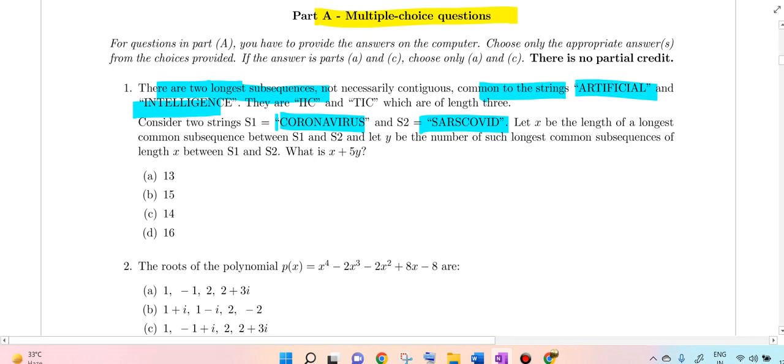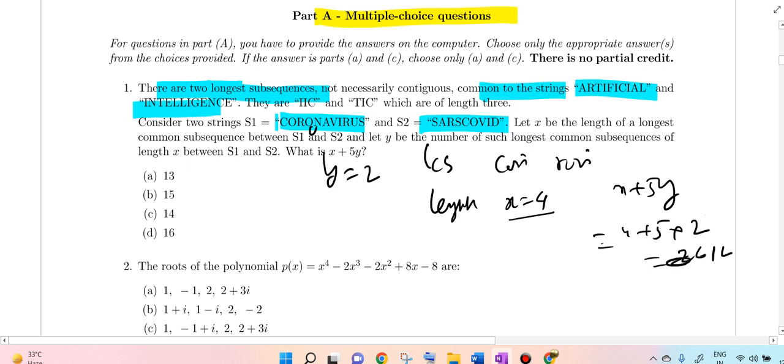What is X plus 5Y? Here the two longest subsequences where Y equals 2 are COVI and ROVI. The length in this case is very easy: X equals 4 as the length is 4. Therefore, X plus 5Y is 4 plus 5 times 2, which equals 14. So answer C is correct.